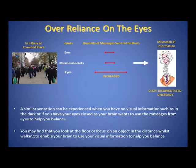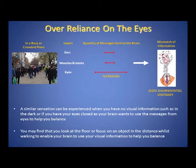For example, if you have a balance problem and have become heavily dependent on the information from your eyes and you are in a busy or crowded place, the eyes would send an increased amount of messages to the brain compared to the ears and muscles and joints, so there would be a mismatch of information which would leave you feeling dizzy, disorientated or unsteady.